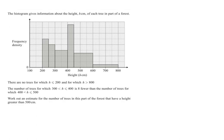So let's look at this question in detail. It says that the histogram gives information about height, h in centimeters, of each tree in part of a forest. So we have heights ranging from 200 being the shortest to 800 being the highest. We have a frequency density, but we do not have the scale here.